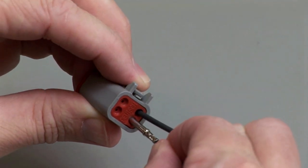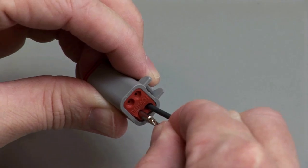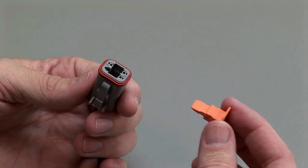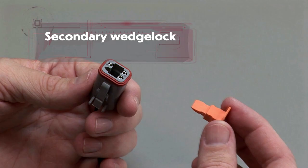Repeat this process until all of the cavities are filled. When populating a DT series connector, secondary wedge locks are required. Wedge locks ensure proper alignment of the contacts.